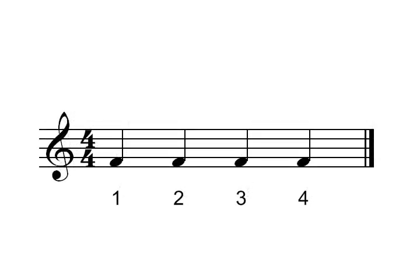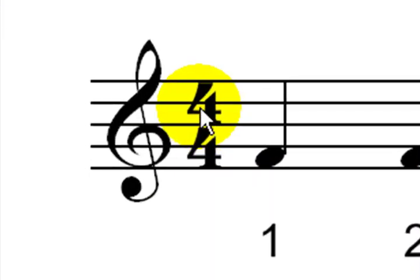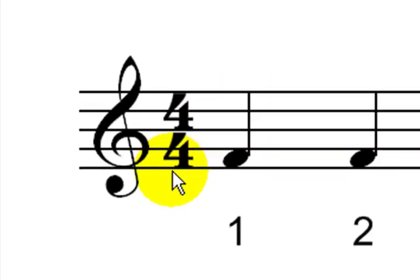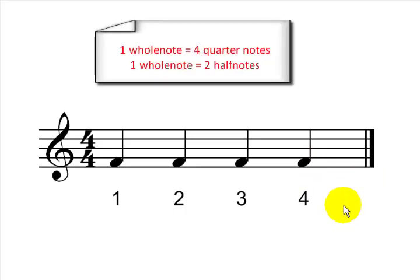And here are the quarter notes. Each of them takes 1 count. As you notice, beneath every quarter note there is a count: 1, 2, 3, 4. And if you remind yourself about the time signature, it actually means that there should be 4 quarter note beats in each measure. And we have 1, 2, 3, 4 quarter notes, and then the measure ends with a barline.